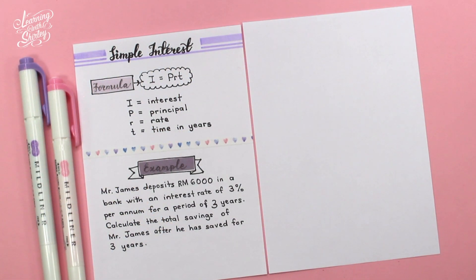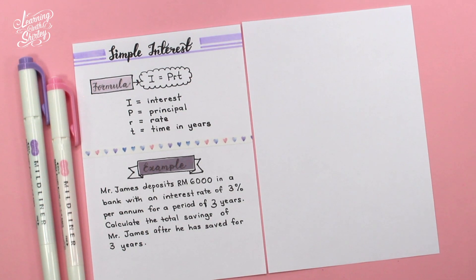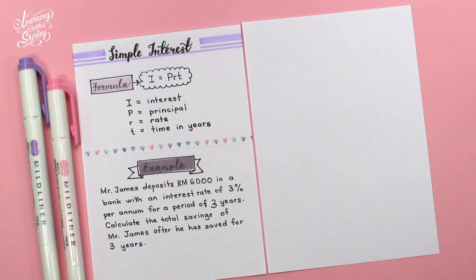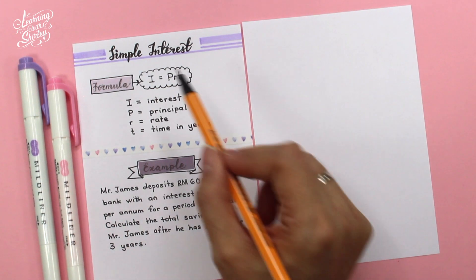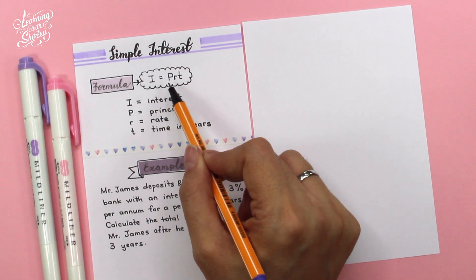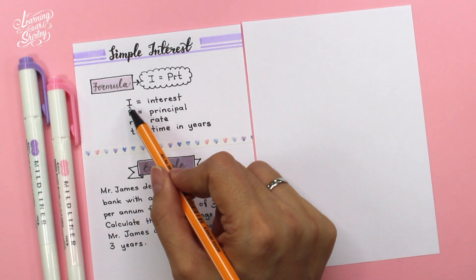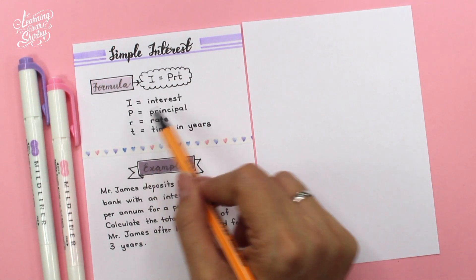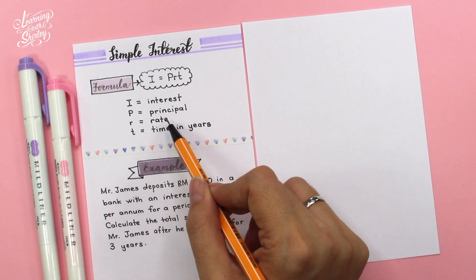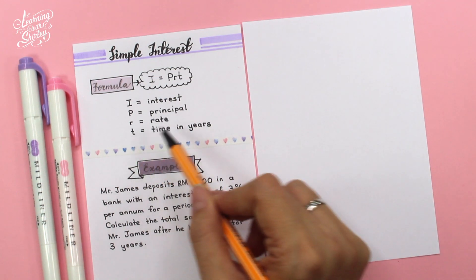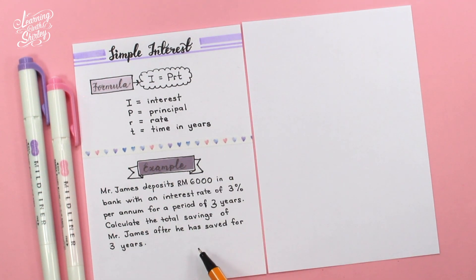What is simple interest? Simple interest is a reward given to the depositor at a certain rate on the deposit amount, which is the principal, for a certain period of time in years. Simple interest can be calculated using the formula: I = PRT, where I stands for interest, P stands for principal, R stands for rate, and T stands for time in years.